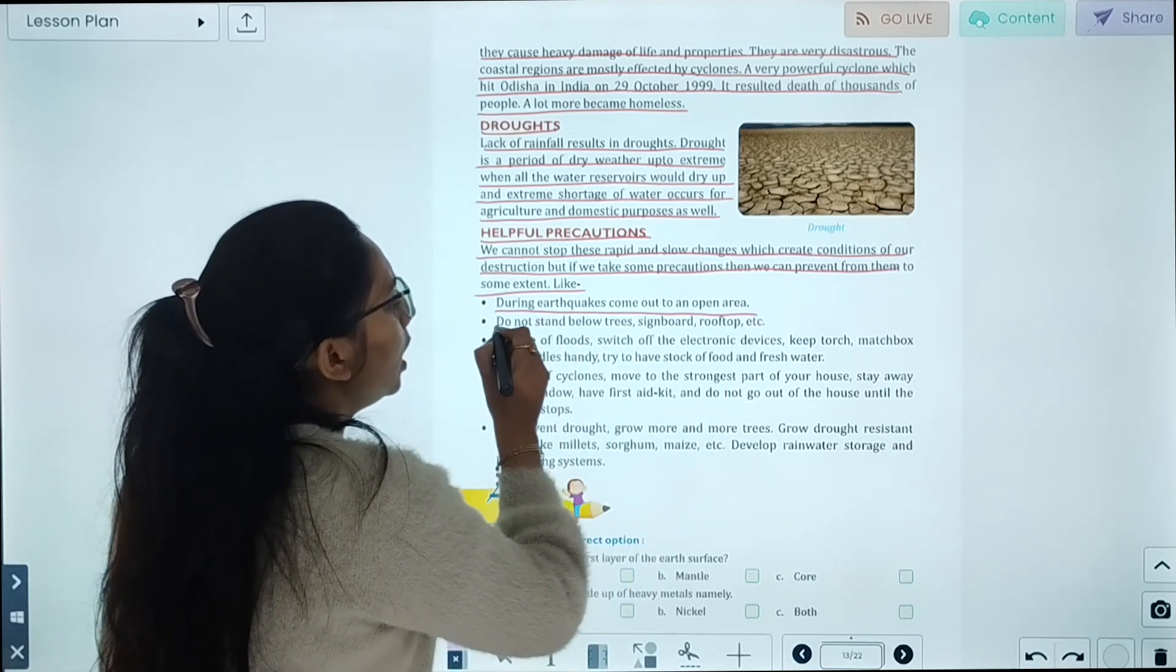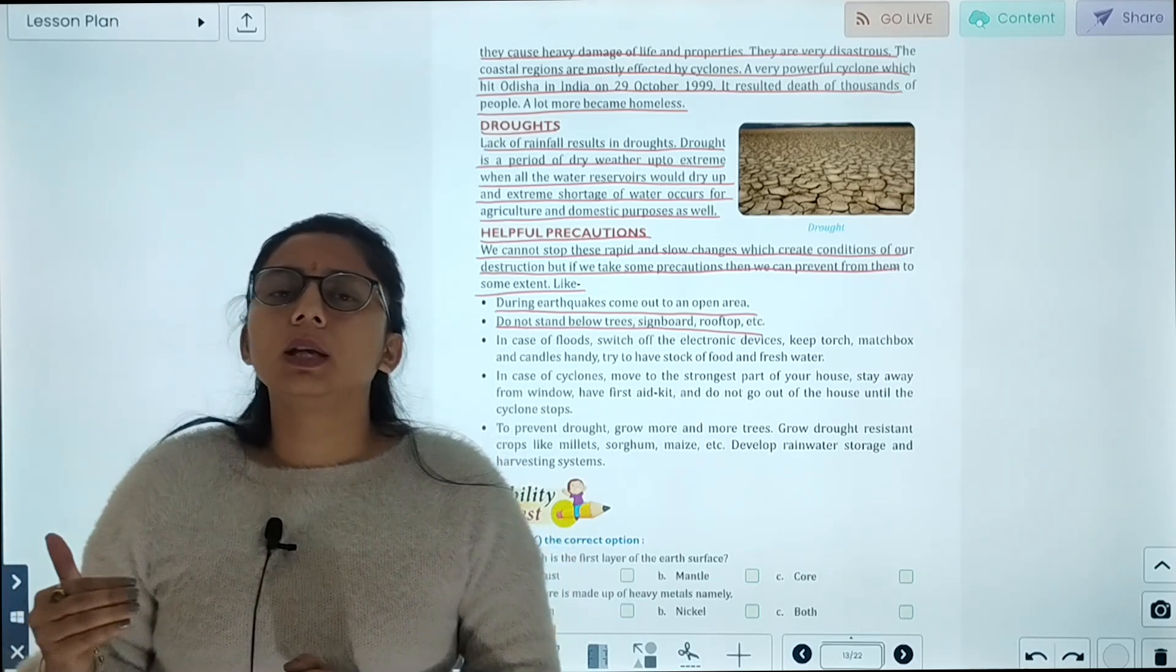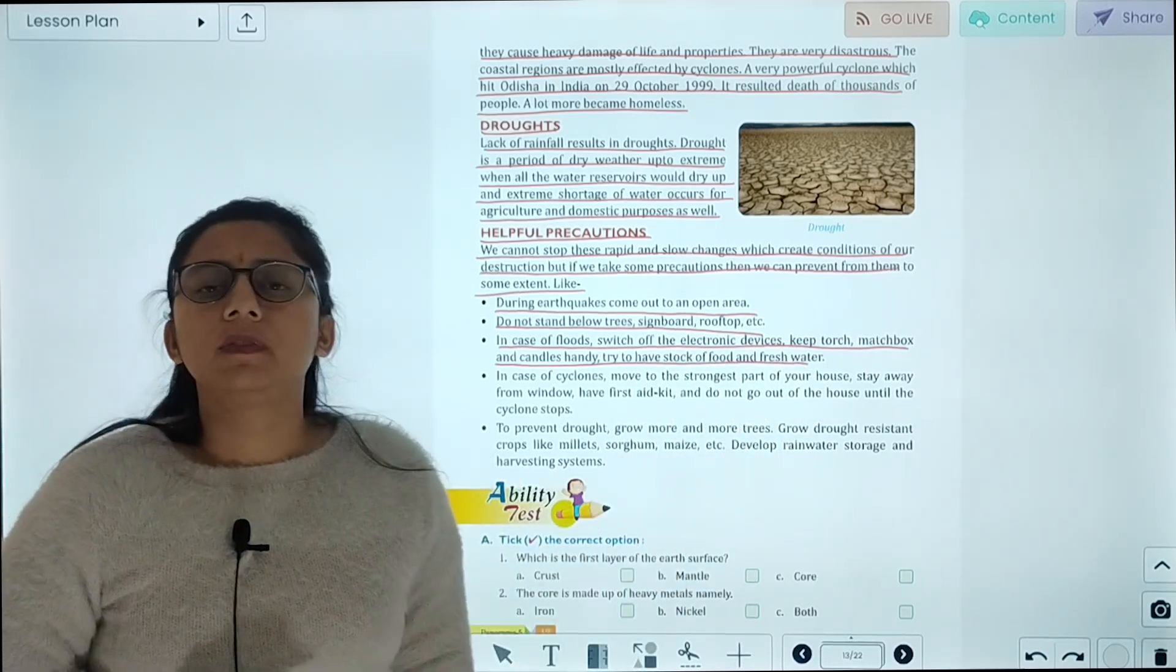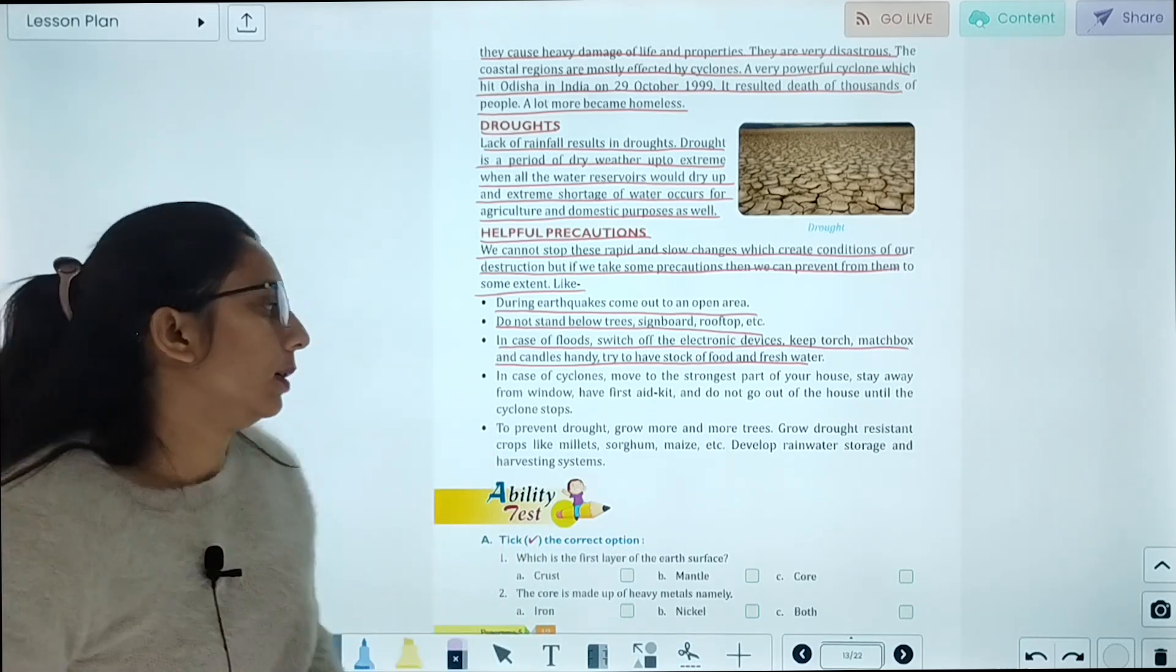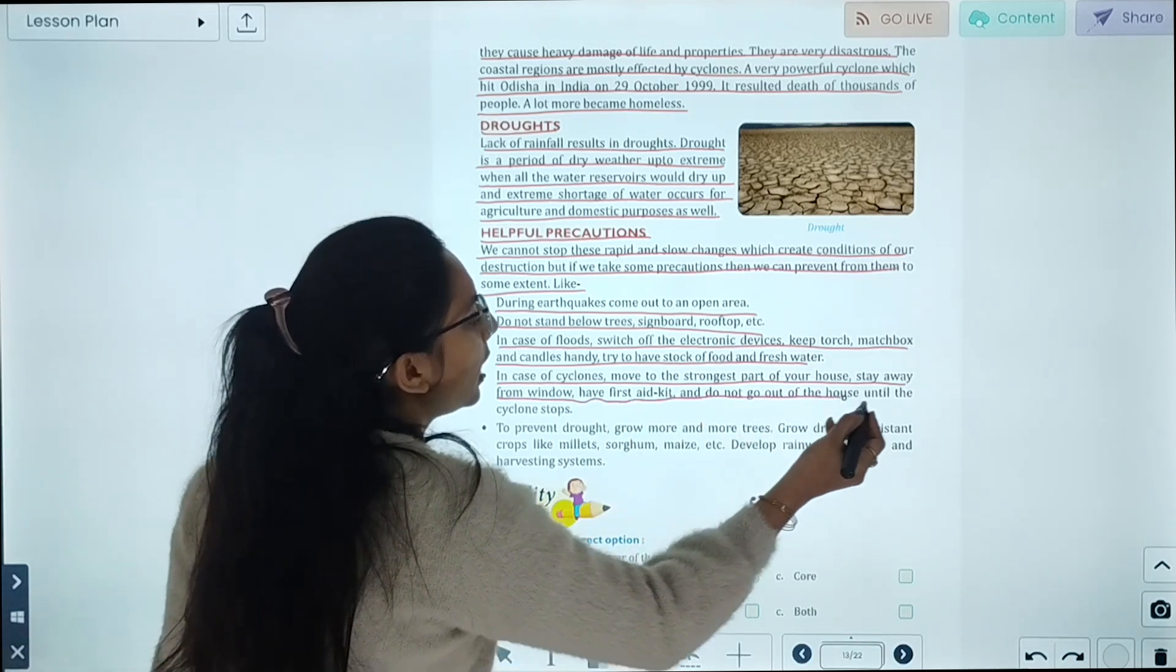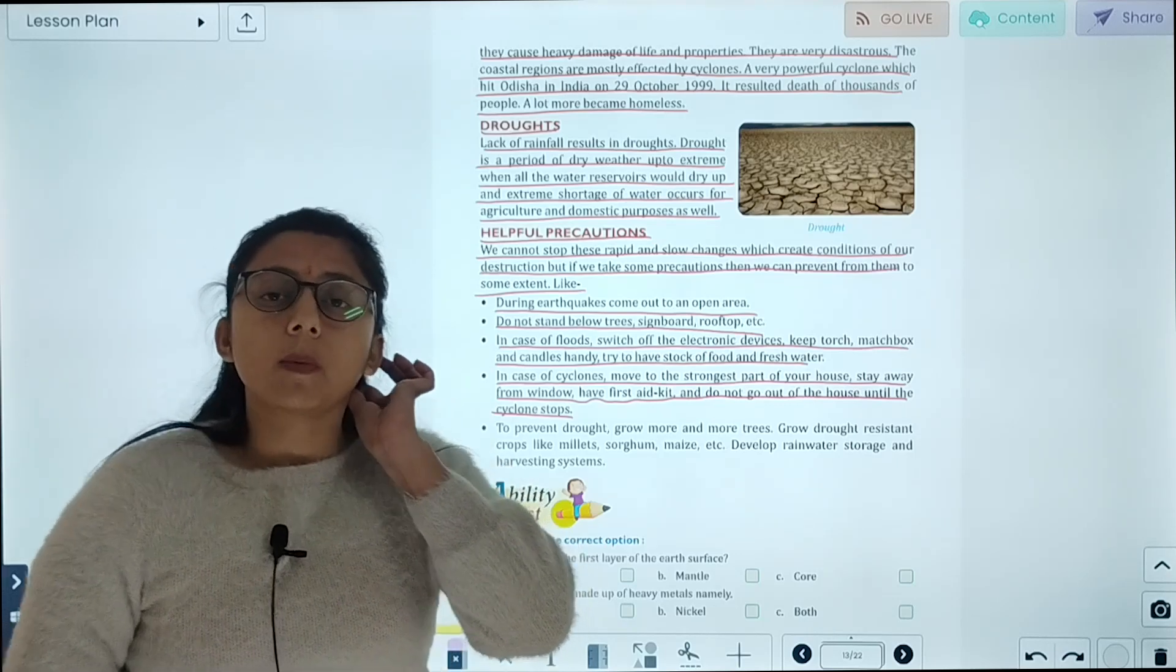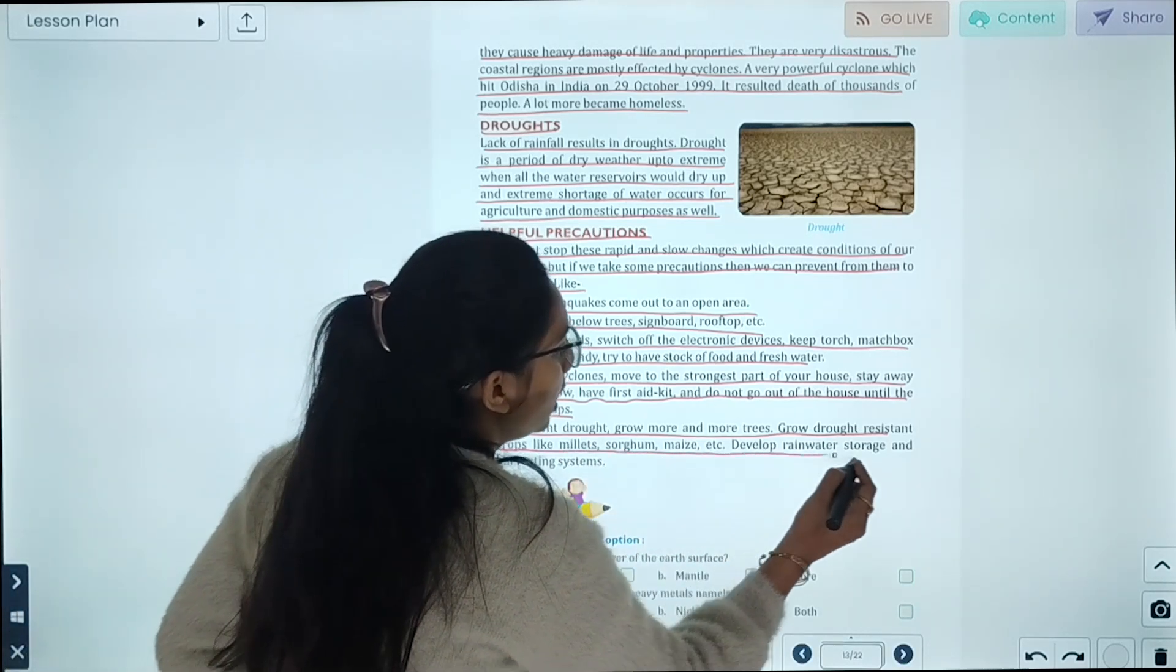During an earthquake, come out to an open area. Do not stand below signs, walls, or roofs. In case of floods, switch off electric devices, keep torch, matchbox, and candles handy, and try to stock food and fresh water. In case of cyclones, move to the strongest part of the house, stay away from windows, keep a first aid kit, and do not go out of the house until the cyclone stops.